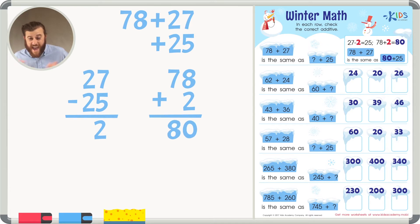So we know that 80 plus 25 is the same as 78 plus 27. But adding 80 plus 25 is a lot easier than adding 78 plus 27.